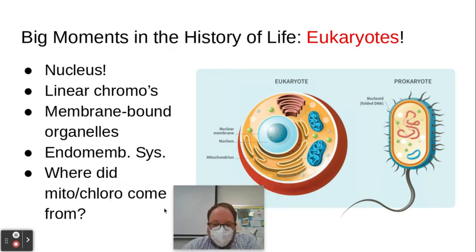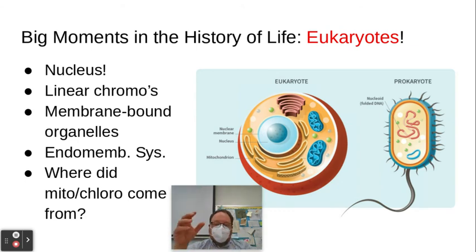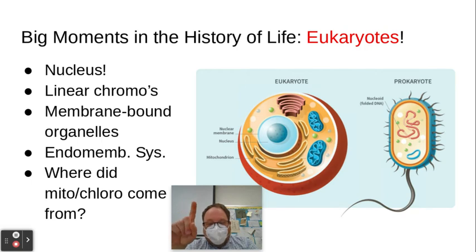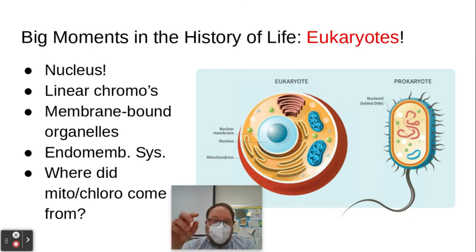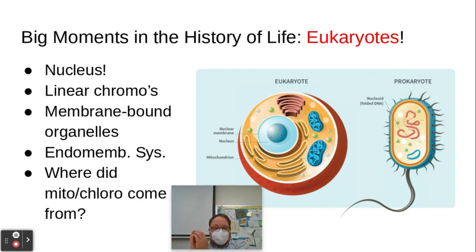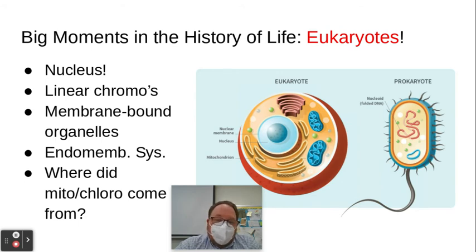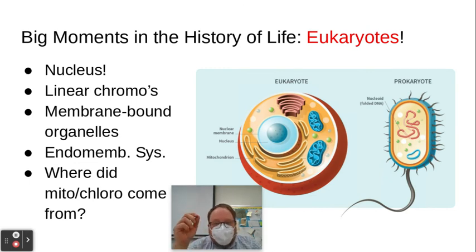Another big moment in life on Earth was the evolution of eukaryotic cells. Eukaryotic cells have a true nucleus, and with a nucleus you can make all sorts of changes to the DNA and messenger RNA. Rather than one circular chromosome, you have many linear chromosomes with additional instructions for creation of additional proteins. You can modify those instructions in the mRNA and make all sorts of different protein products. You also have membrane-bound organelles — the rough ER, smooth ER, mitochondria — which allow for increased efficiency in chemical reactions by concentrating enzymes within certain organelles. You also have the endomembrane system — the rough ER, the Golgi — where you can modify proteins to do very specific jobs.